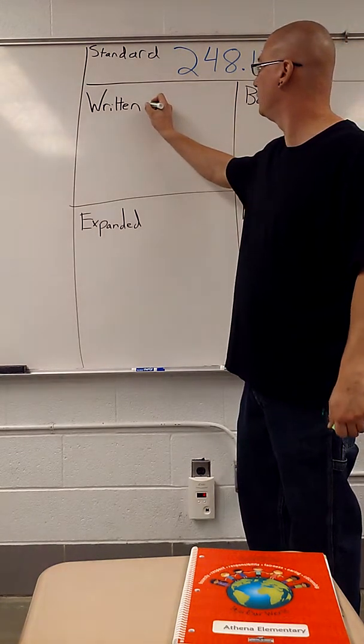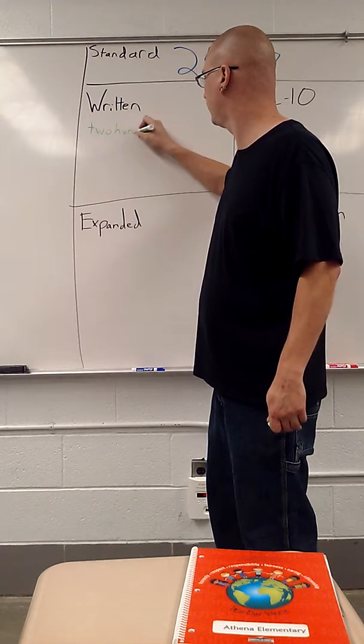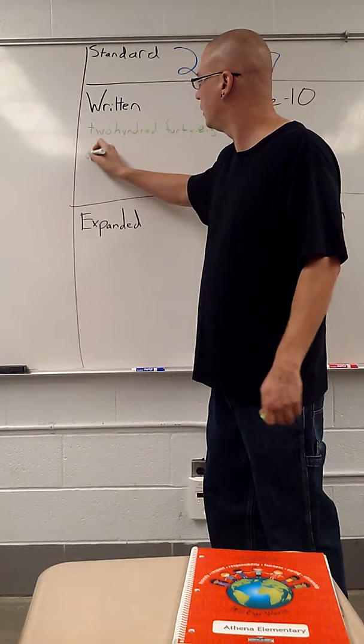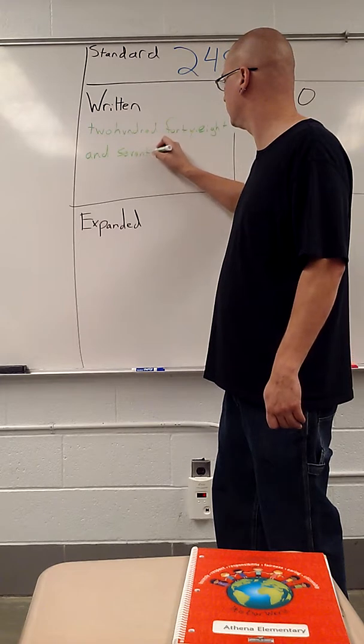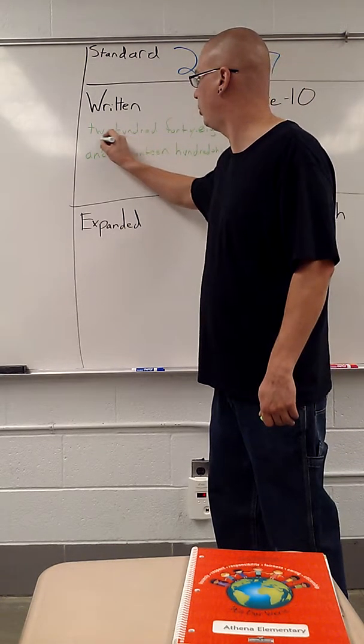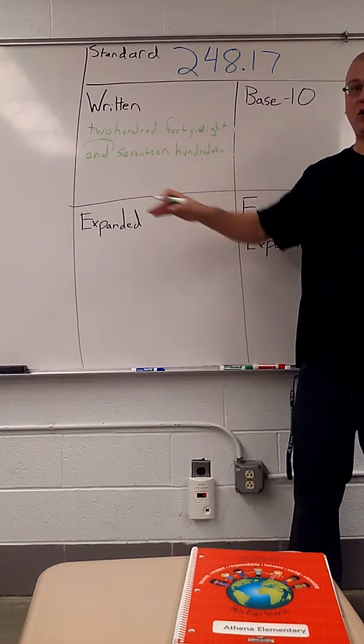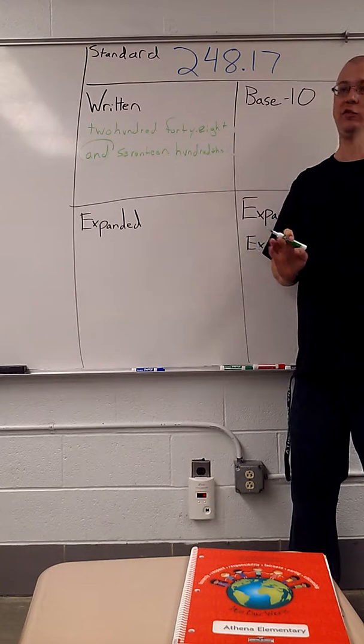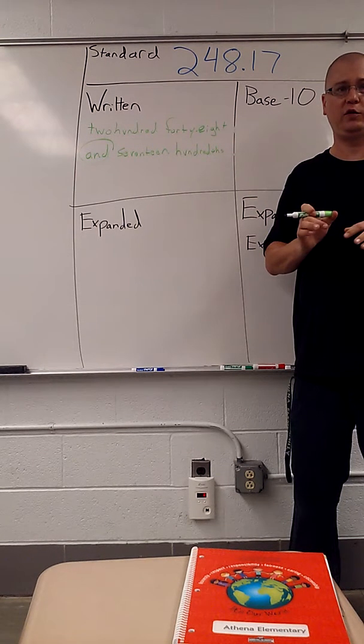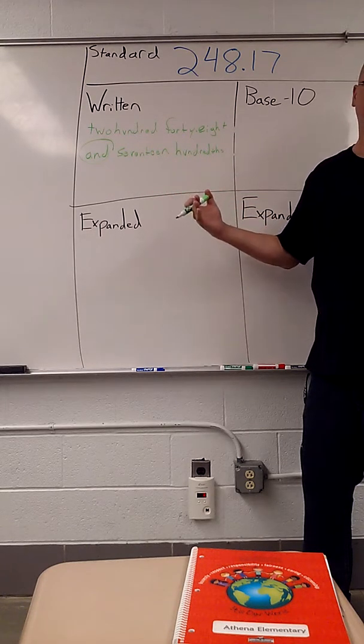The other really easy one is written form. It's just words, not numbers. So we're going to go with 248 and 17 hundredths. The most important thing to know about written notation is the AND. The AND goes where the decimal goes, so that we know after we pass this AND we're talking about smaller than one, pieces that are smaller than our whole numbers. The other most important thing to remember about written notation is spelling counts.